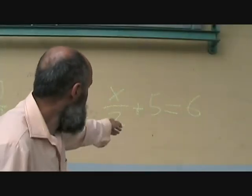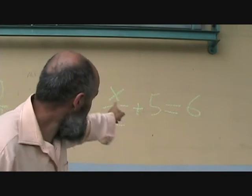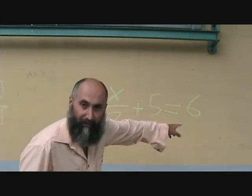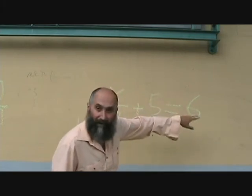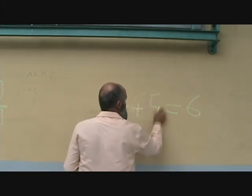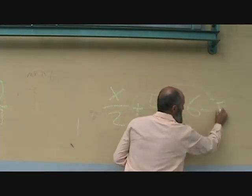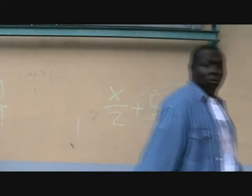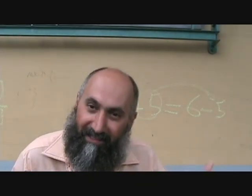x over 2 plus 5 is equal to 6. Now you can't cross-multiply the 2 up, you have to move the 5 over first. So you grab this guy, bring it over, which becomes minus 5. So you go 6 minus 5.